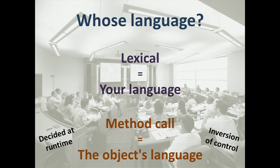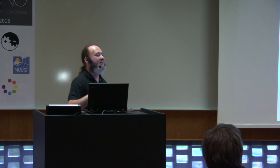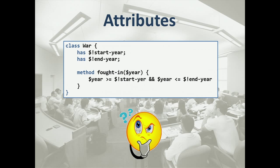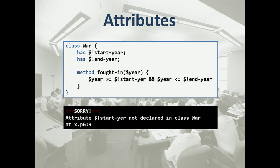Method calls, by contrast, are about the language of the object you're sending the message to — interpreted as the object sees fit. We've made a very distinct boundary between current language versus the object's language. So what does fall inside a class at compile time? For example, if you reference an attribute that isn't declared, it's a compile-time error — it says 'sorry, this attribute is not declared in the class War.' We catch that at compile time.